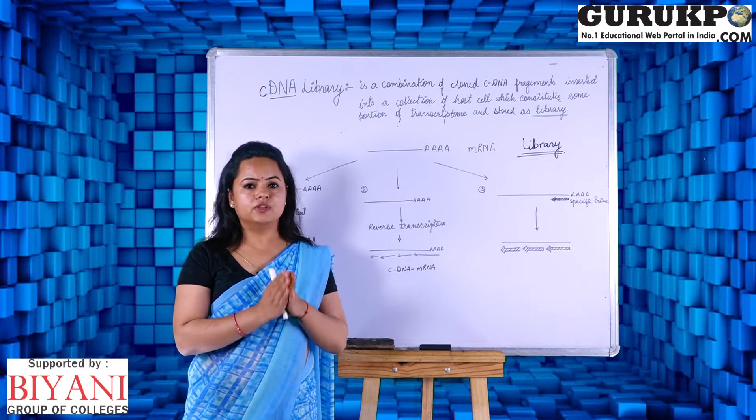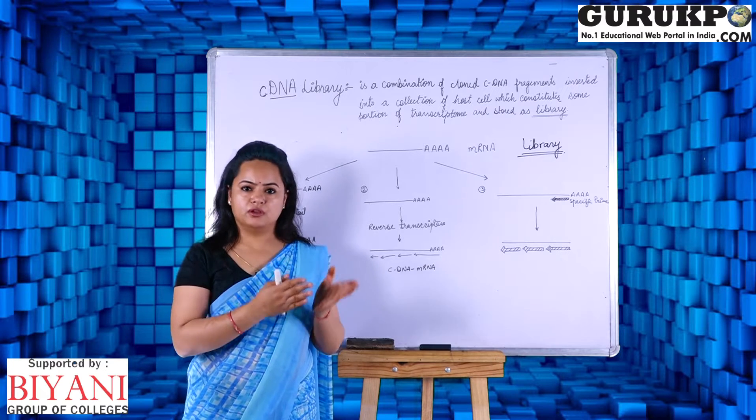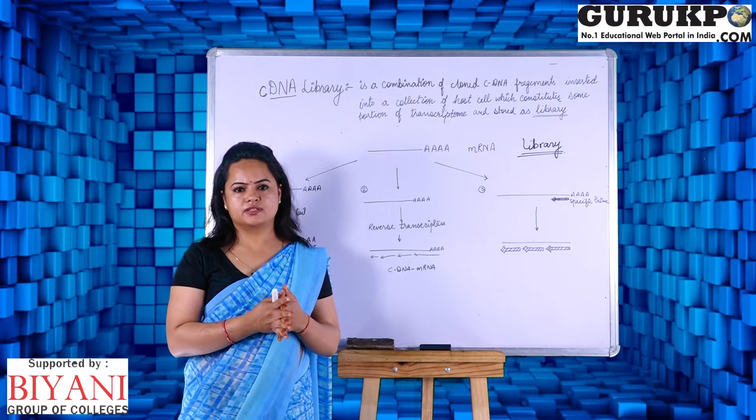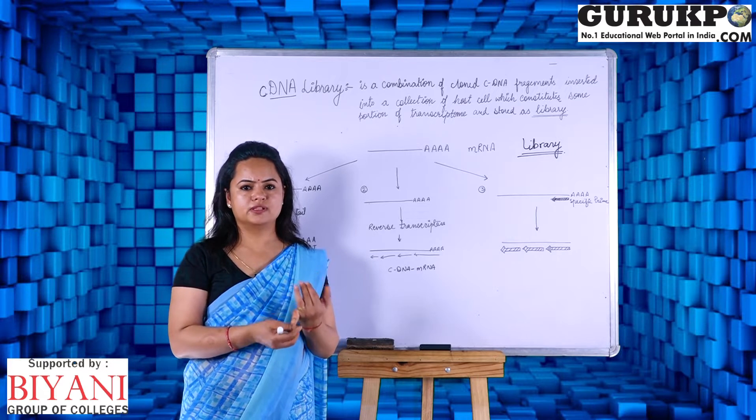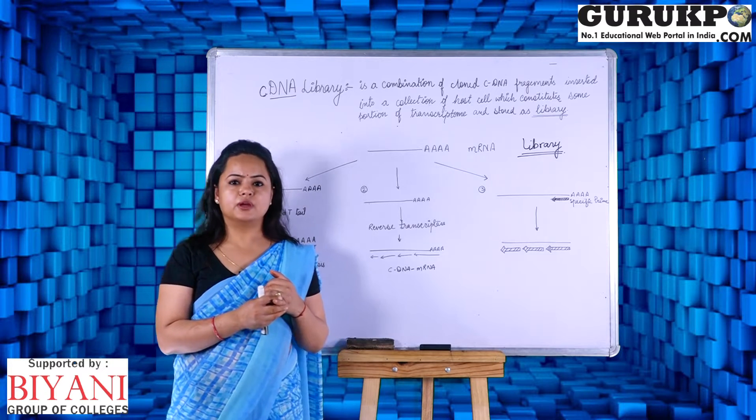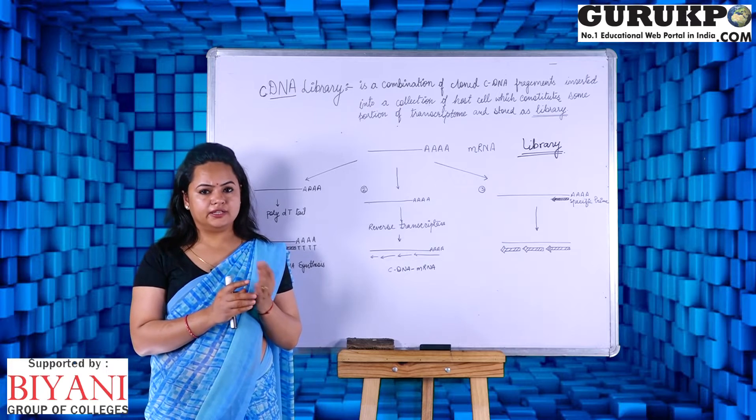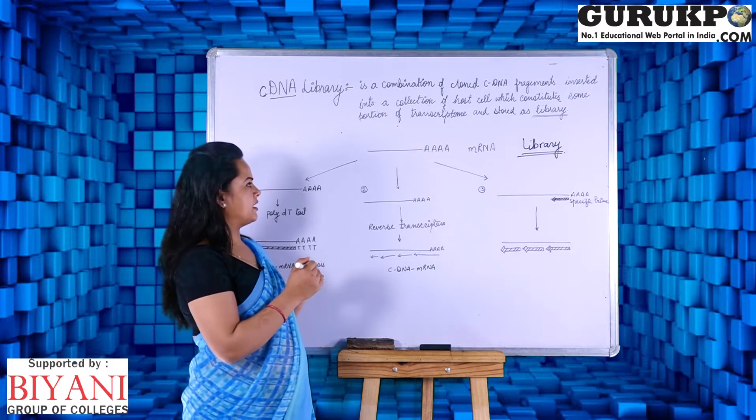First of all, we need RNA, and RNA could be isolated from any of the cells by following any of the procedures, like if we are working on microbial cell or plant cell or animal cell. The protocols are different for all three, but we can easily isolate the total RNA of a cell and later on we can purify the messenger RNA out of that.